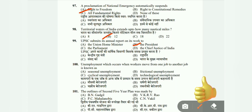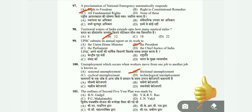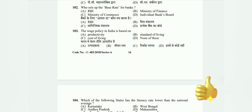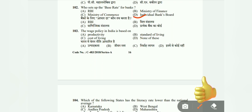Question 100: Employment which occurs when workers move from one job to another is known as seasonal unemployment, frictional unemployment, cyclical unemployment, or technological unemployment? The correct answer is B, frictional unemployment. Question 101: The outline of the Second Five Year Plan was made by B.N. Gadgil, V.K.R.V. Rao, P.C. Mahalanobis, or C.N. Vakil? The correct answer is C, P.C. Mahalanobis. Question 102: Who sets the base rate for banks — RBI, Ministry of Commerce, Ministry of Finance, or Individual Bank Board? The answer is Individual Bank Board. Question 103: The wage policy in India is based on productivity, standard of living, or cost of living? The correct answer is C, cost of living.